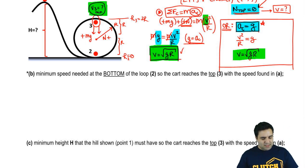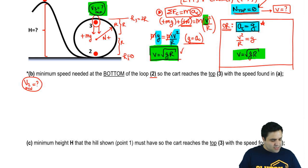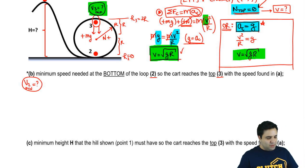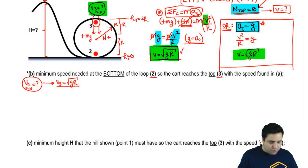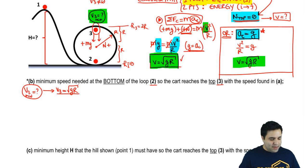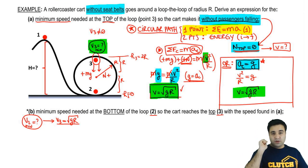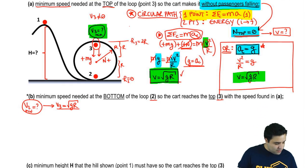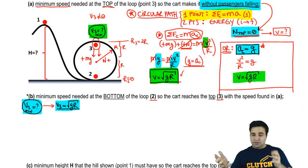For part B, I'm asking: what is the minimum speed V2 needed at the bottom of the loop (point 2) so that the cart reaches the top (point 3) with the speed found in part A — which was √(gR)? Here I clearly have two points, so I have to use the energy equation. I'll write the energy equation from point 2 to point 3.